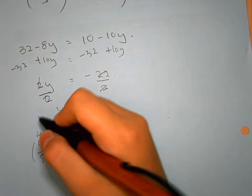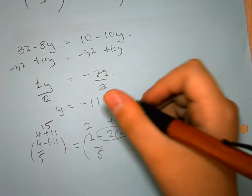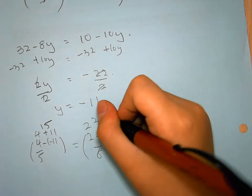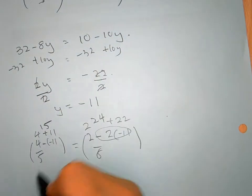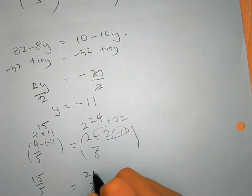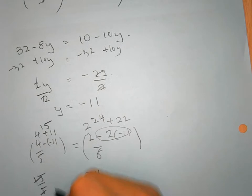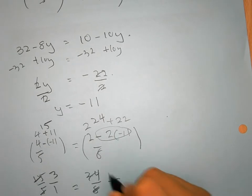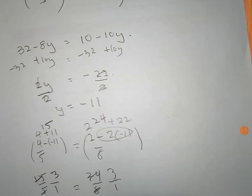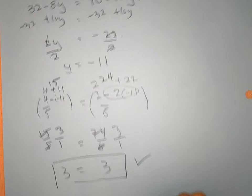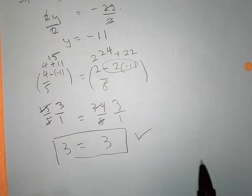So it becomes 15 over 5 and 24 over 8. If I simplify this one, 3 equals 3, and then the answer is confirmed.